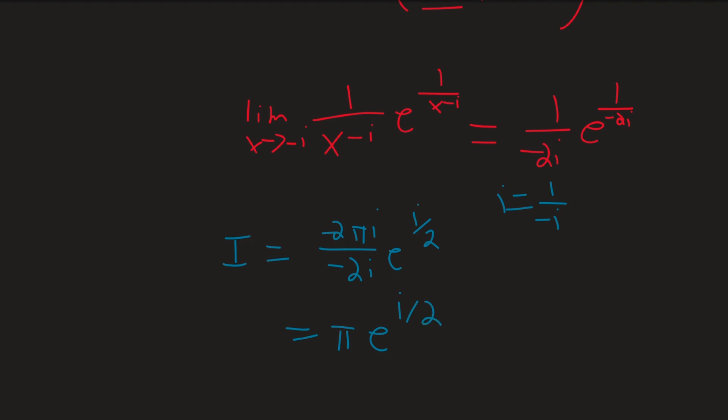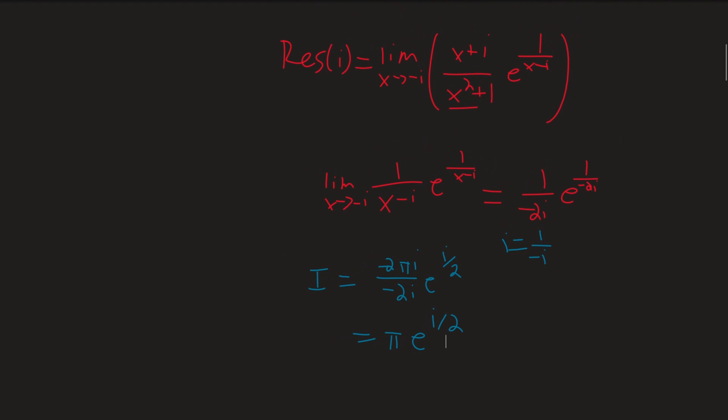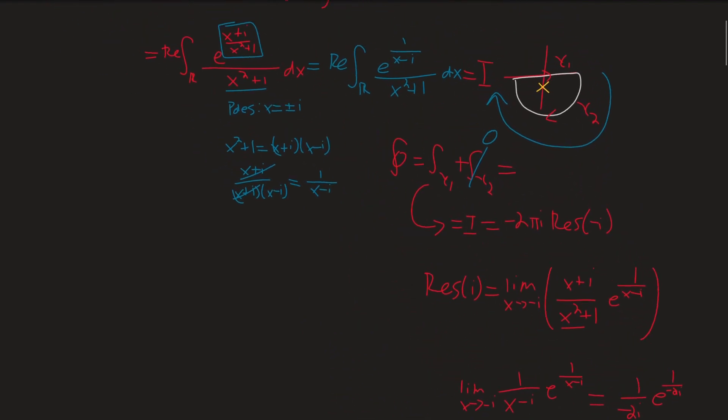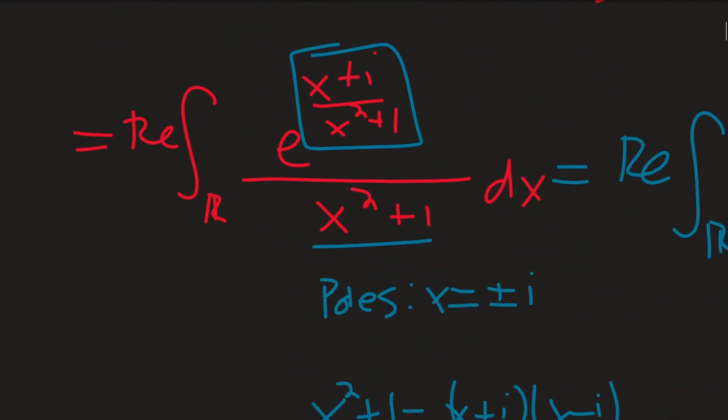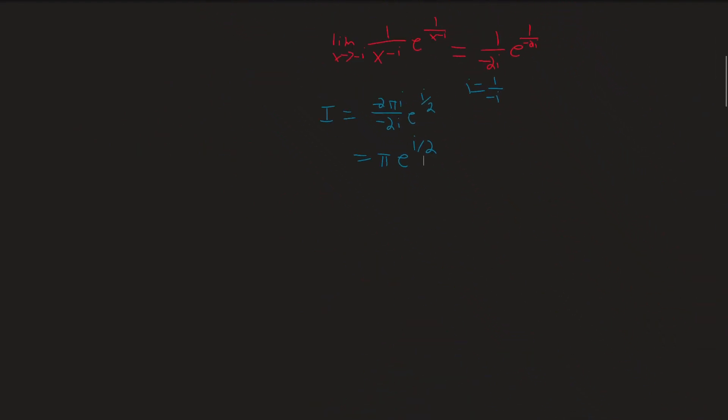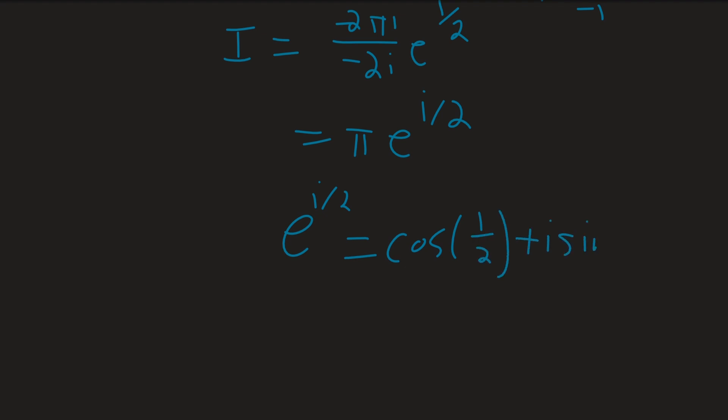So, what did we want to find originally? We wanted to find, kind of moving on up here, we wanted to find the real part of this. We've evaluated our integral, but we want the real part of it. Meaning that if we just have to take the real part of π e^(i/2), that's really not so bad because e^(i/2) is just equal to, by Euler's identity, cosine of 1/2, plus i sine of 1/2. Meaning that our integral is equal to π times the cosine of 1/2.